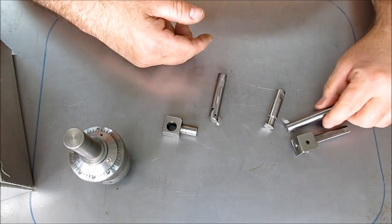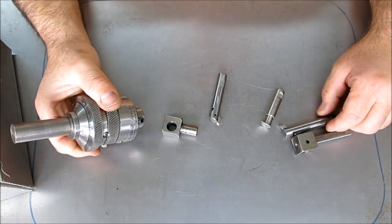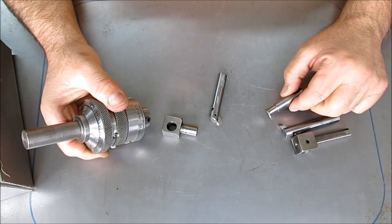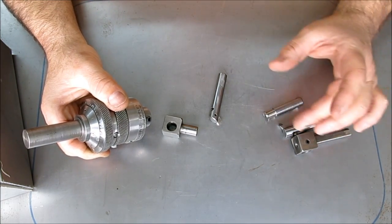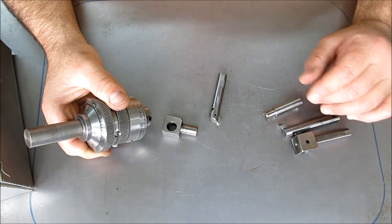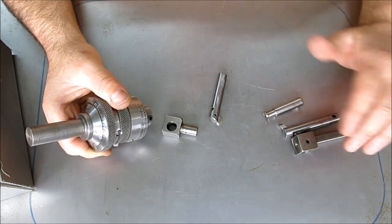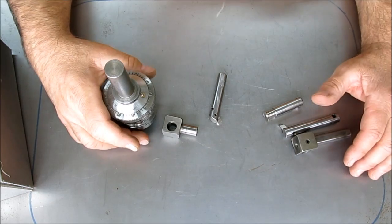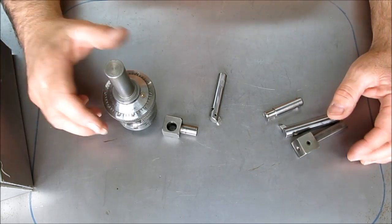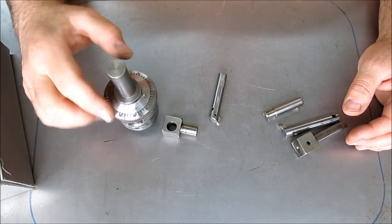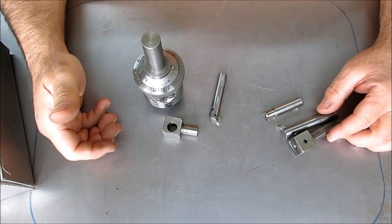All I've ever used it for is boring and making internal snap ring grooves, and then sometimes facing the bottom of a counter bore if I wanted it real flat for some reason. Anyway, let's go over to the mill, and we'll get this thing set up in the mill, and I'll show you some of its capabilities.